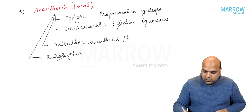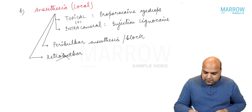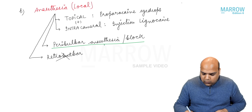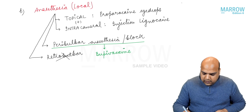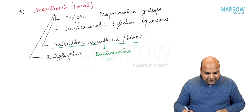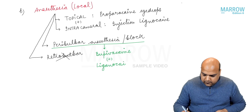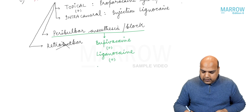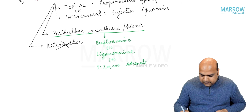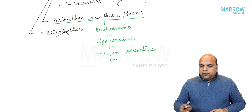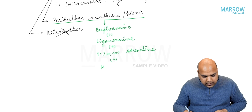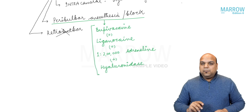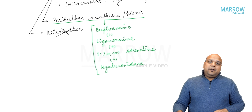Peribulbar anesthesia is also called a peribulbar block. The drug combination used is: bupivacaine for long duration of action, lignocaine for quick onset, adrenaline at a 1 in 200,000 dilution to make it more rapid, and hyaluronidase for better penetration through muscular and other tissue types. This combination is also sometimes called midricaine.